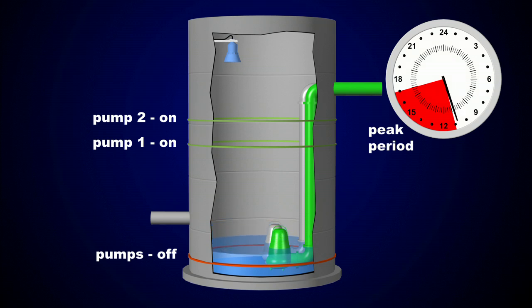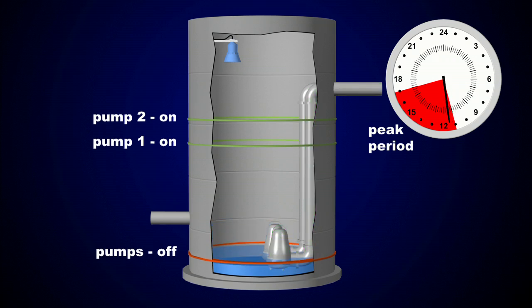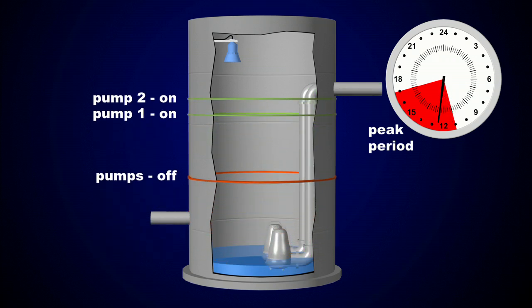When the peak period starts, the Citroen's LUT400 switches to a different set of high and low set points. The wet well now stores more wastewater before pumping starts.